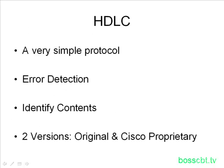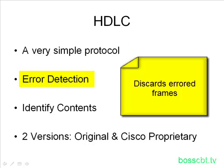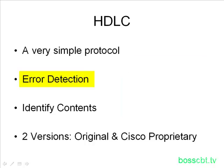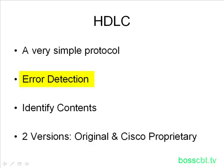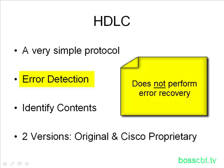HDLC is a very simple protocol, meaning it doesn't do a whole lot for us. What it does do is provide error detection, and it's very similar to Ethernet in how it does it. If it discovers an error, it simply discards the frame. It checks for errors using a frame check sequence located in the trailer of the frame. It doesn't perform any error recovery — it leaves that up to higher layer protocols.